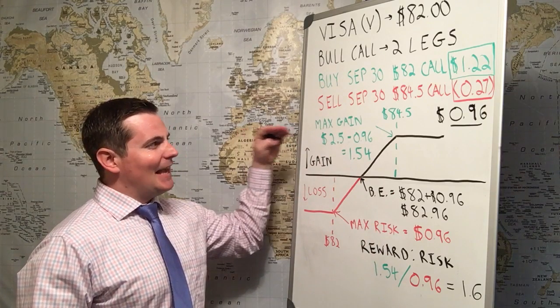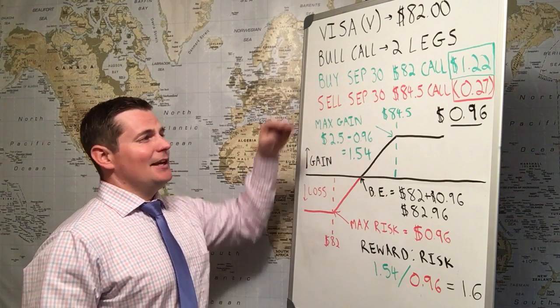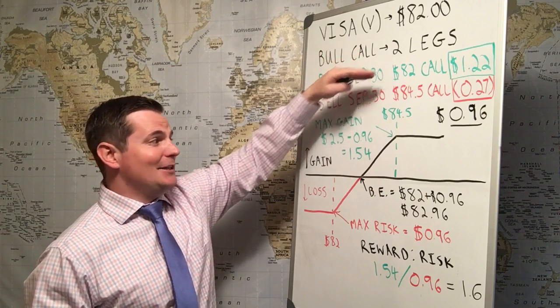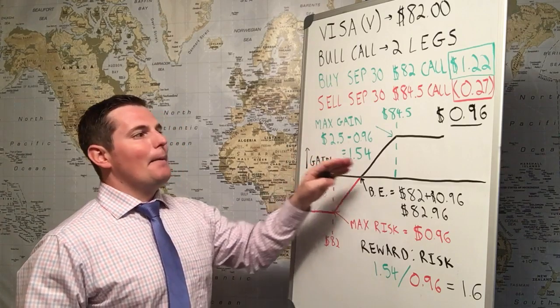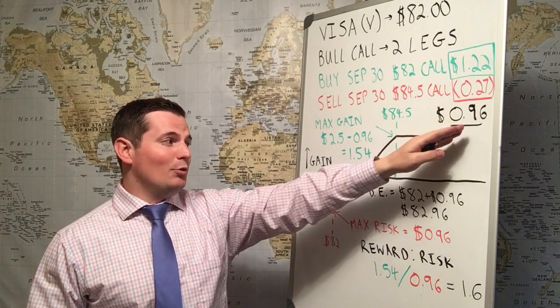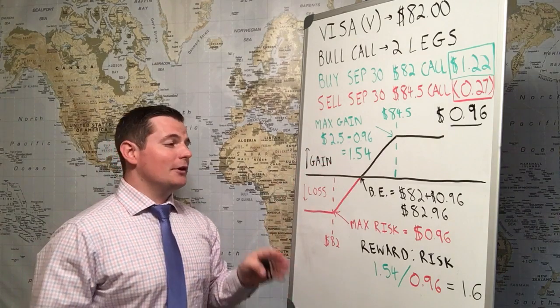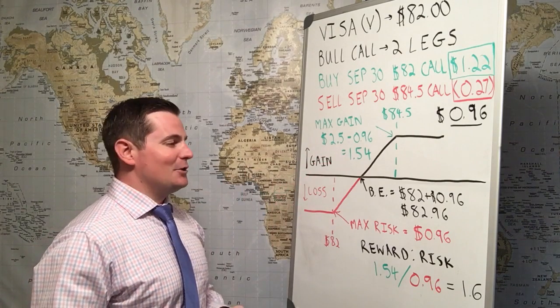The max gain on the trade is the spread, so that's $84.50 minus $82 is $2.50, minus the debit, which was $0.96. You get a max gain of $154 per spread trade.